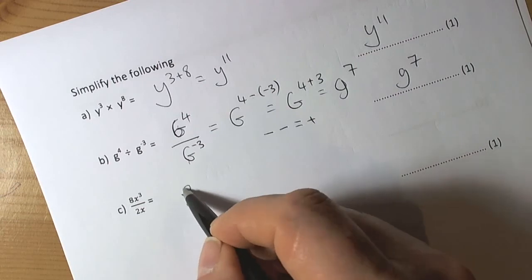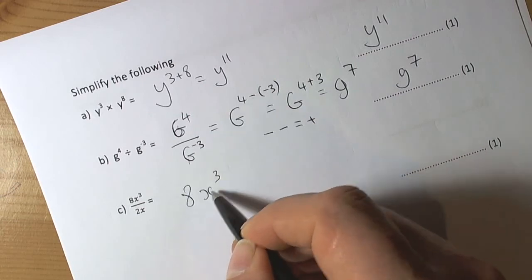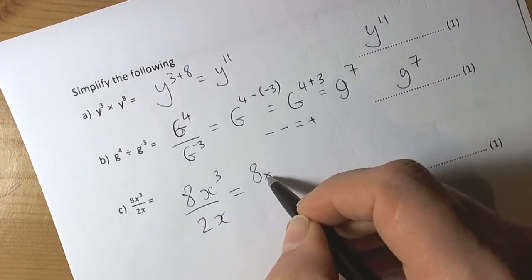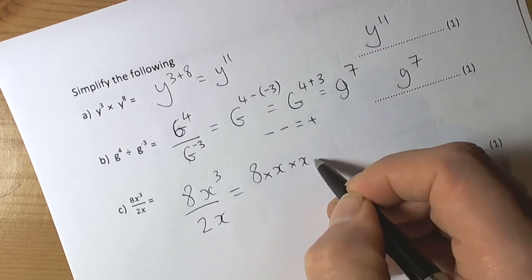This one, just got to be careful, we've got 8x cubed divided by 2x. Well, it might help to write that out in full, so x cubed means 8 times x times x times x,